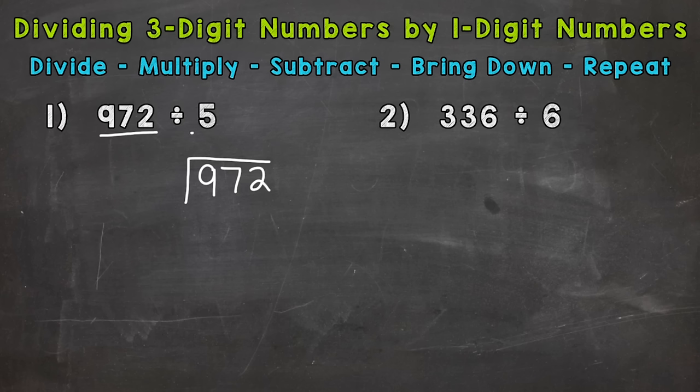Now the 5, the second number here, that's our divisor, that goes outside. And now we're ready to go through the division process, which is at the top of your screen: divide, multiply, subtract, bring down, repeat.